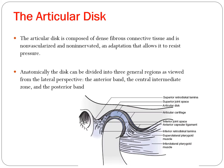The articular disc is composed of dense fibrous tissue and is non-vascular and non-innervated. This adaptation allows it to resist pressure and prevent trauma to the mandibular fossa and condyle during chewing. The disc can be divided into three general regions viewed from the lateral aspect: the anterior band, the central intermediate zone, and the posterior band.